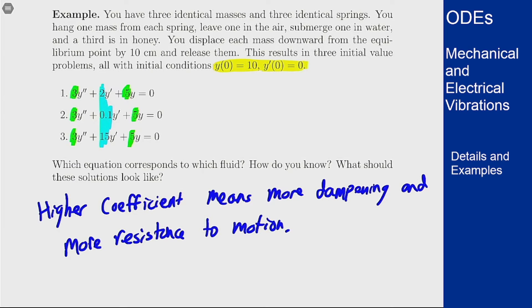The air is going to have some friction obviously, but it's not going to have a lot compared to water or honey. If we've got our coefficients, the lowest coefficient here is equation 2, which means this should be the one in the air.